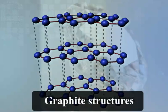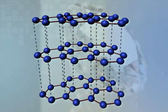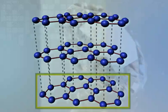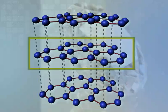In graphite, each carbon atom is bonded to three other carbon atoms in the same plane, forming layers of hexagonal arrays. These layers of hexagonal arrays are placed one above the other.